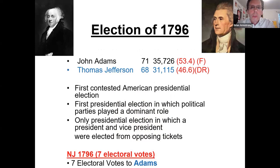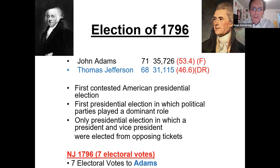The third election, 1796, was very significant — the first contested election in history, with two candidates representing two party ideas: the Federalists versus the Democratic-Republican Party. It's the only election where the president and vice president were elected from opposing tickets, because whoever got the most votes became president and the second-most became vice president. This created big tension between Adams and Jefferson, who had very different political ideas, and led to the development of running as a party ticket.